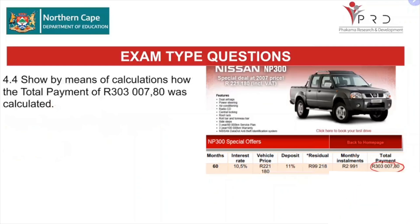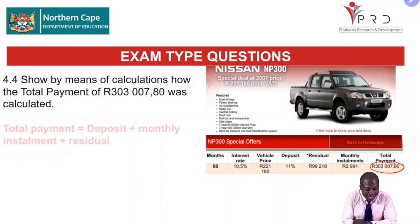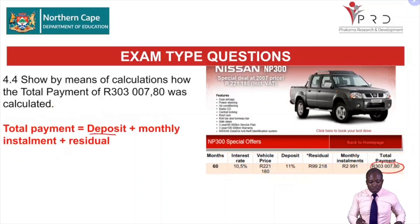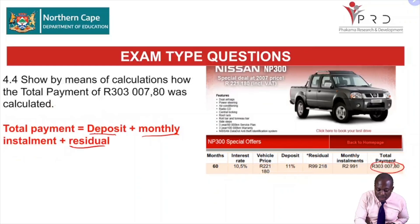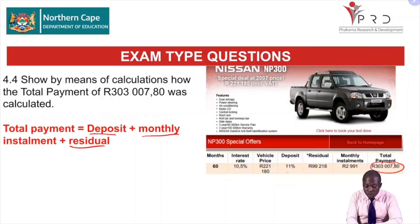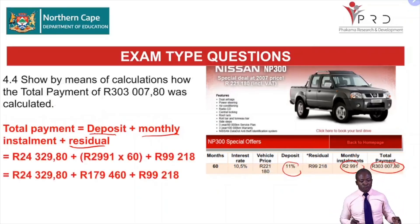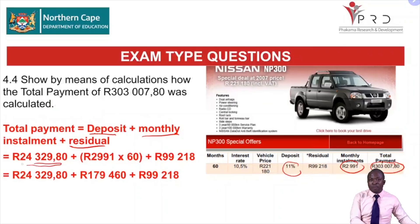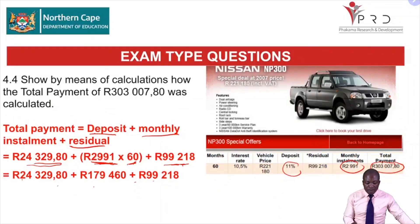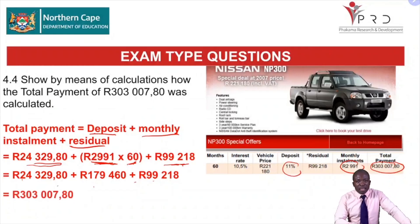The total of 303,780 comes from the deposit of 24,329, plus the monthly installment of 2,991 over 60 months, plus the residual balloon payment. When you add all of them together, it takes you to 303,780 rand. So you must show: deposit plus (monthly installment times number of months) plus residual equals total payment.